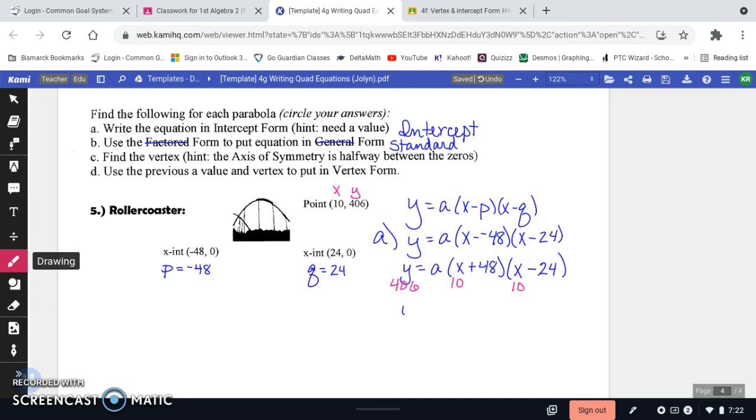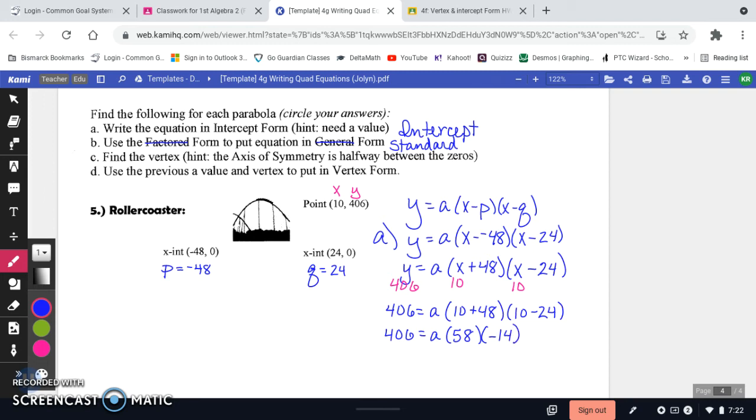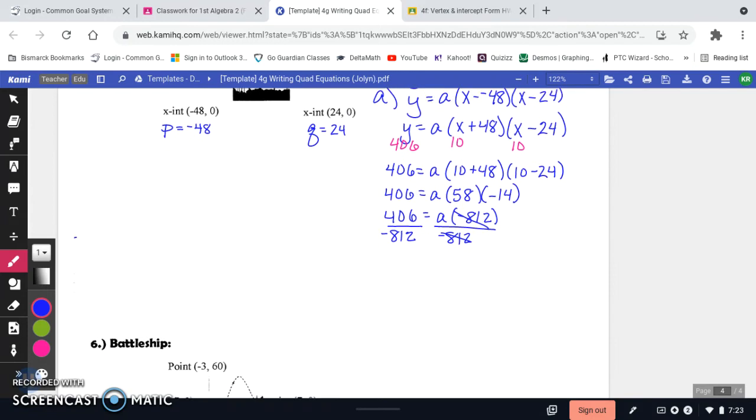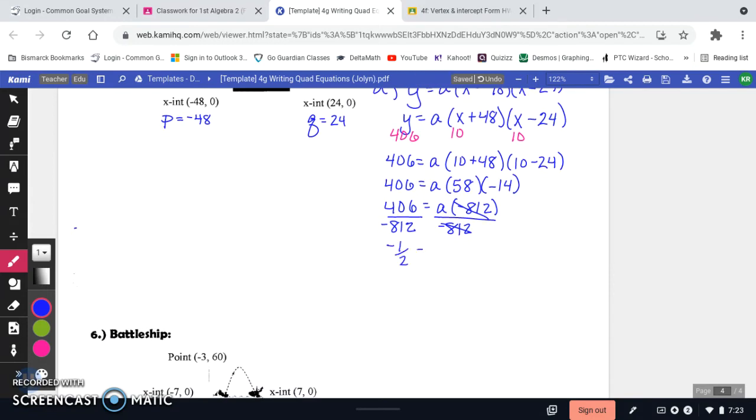So your equation's now going to look like Y equals, oh nope, not Y, I need 406. So 406 equals A, and then 10 plus 48, and 10 minus 24. So when you simplify, this is 406 equals A times a negative 812. So I'm going to divide by the negative 812, both sides, and simplify. So this is going to be negative 1 half equals A.